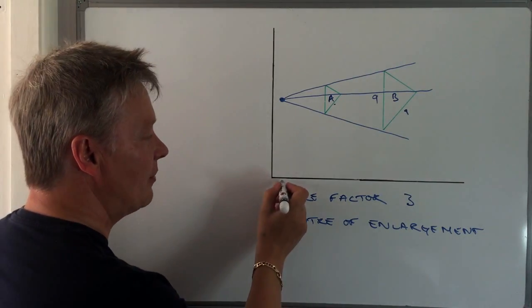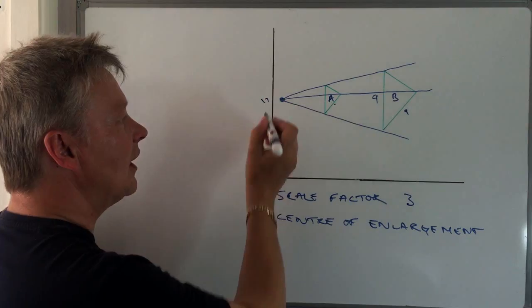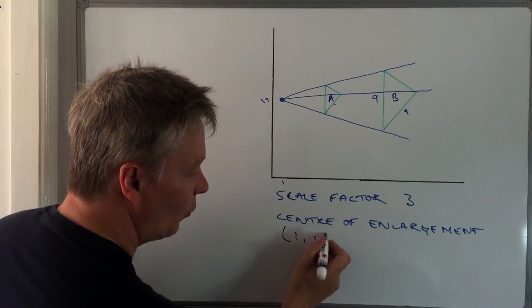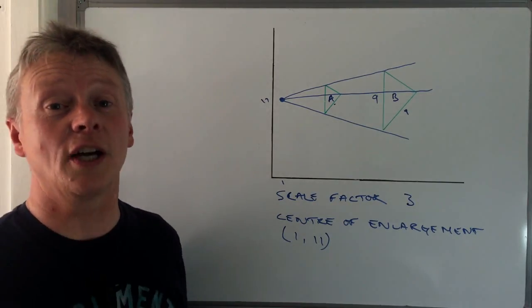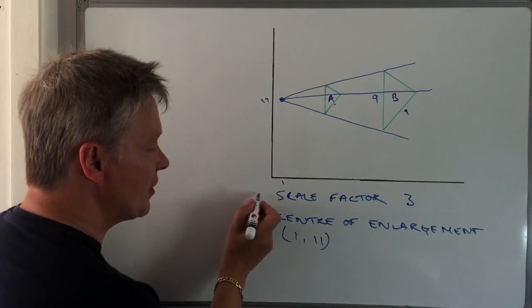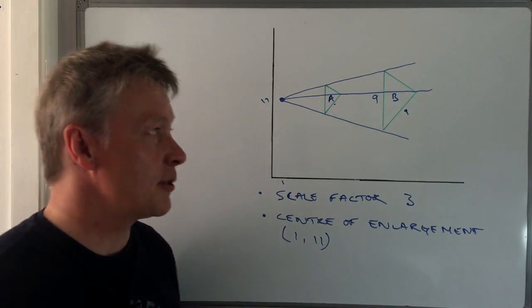In this particular case it may be something like 1,1,1. So the center of enlargement would be 1,1,1. So the two things that you need to be aware of when you're describing enlargements on a graph is the scale factor and the center of enlargement.